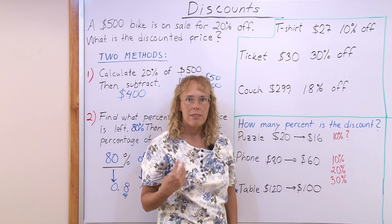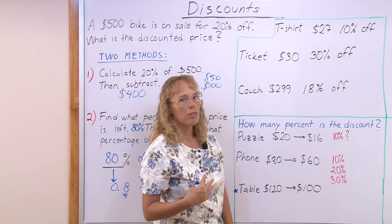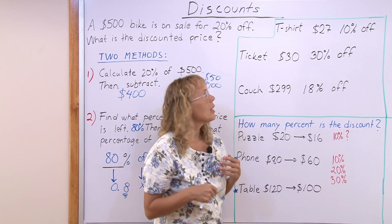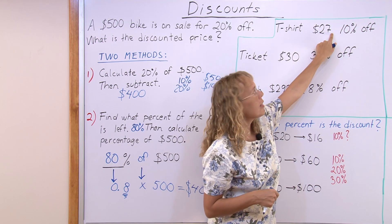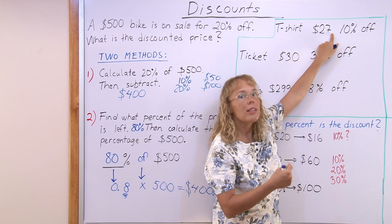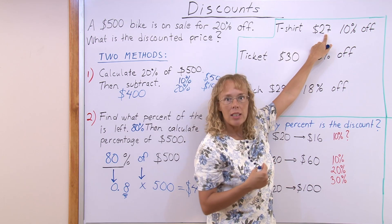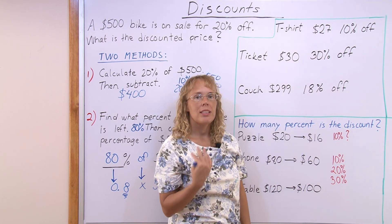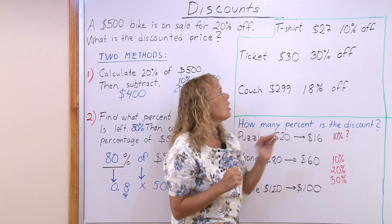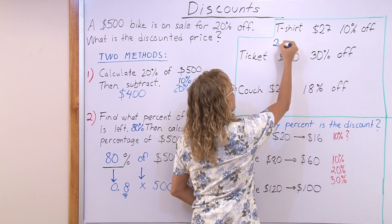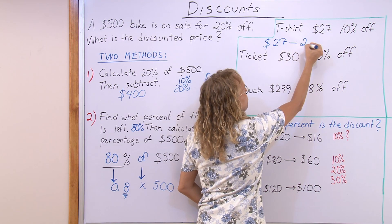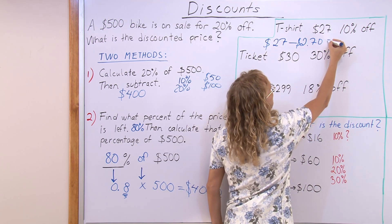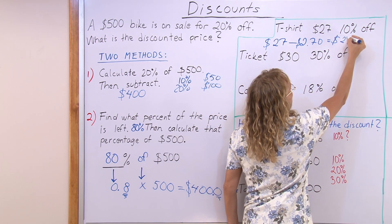Here are some more examples. A t-shirt costs $27 and it is 10% off. 10% is very easy to calculate — you just divide the number by 10. Think that there is a decimal point: 27.0, move it one step backwards, so 10% is $2.70. We subtract that amount from $27 — that's how much the price is reduced — giving us $27.00 minus $2.70, which equals $24.30.